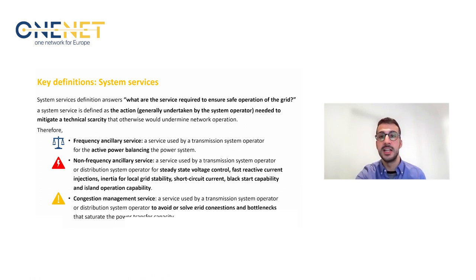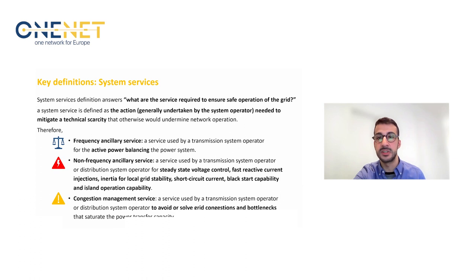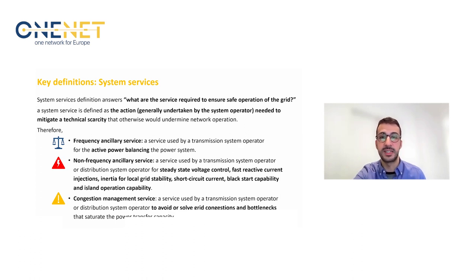In the context of OneNet, three main categories of system services have been defined. Frequency ancillary services, used by TSOs — transmission system operators — for active power balancing, and non-frequency ancillary services, used by transmission or distribution system operators for steady-state voltage control, fast reactive current injection, inertia, black start capability, and islanded operation. Moreover, congestion management service is used by transmission or distribution system operators to avoid or solve grid congestion that may saturate the power transfer capacity of the network.